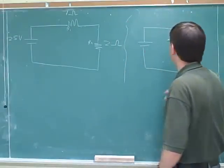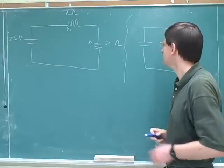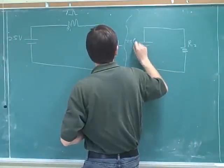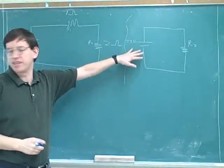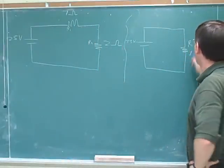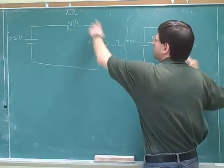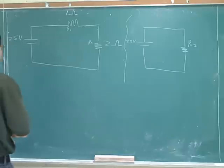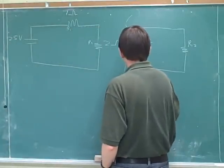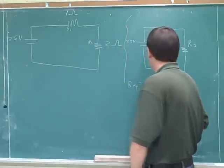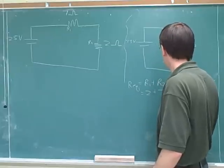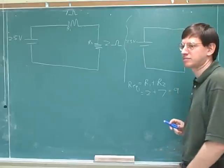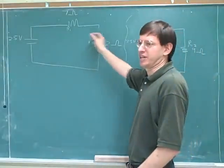I'll call this R12 because it's equivalent to R1 and R2 together. What numbers from the previous picture can I pull over? Well, it's the same battery, so we can pull that over — when you draw a new equivalent circuit, you can always pull the battery numbers over. Now, the equivalent resistance: they're in series, so we use the sum formula. R12 equals 2 plus 7, which is 9 ohms. I should put that number 9 in this new picture — not the old one. I'm working in this new equivalent circuit picture.